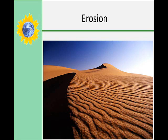Erosion involves transporting sediments away from their place of origin to another location where they are deposited. Most forms of erosion are driven by the force of gravity. Physical and chemical weathering reduces fragments to smaller sediments, which are moved further along by agents of erosion, such as wind, water, ice, or gravity.